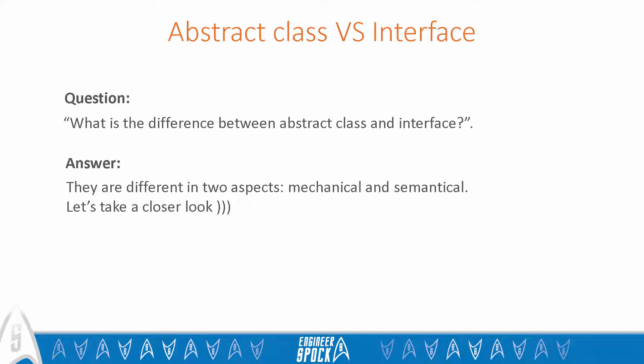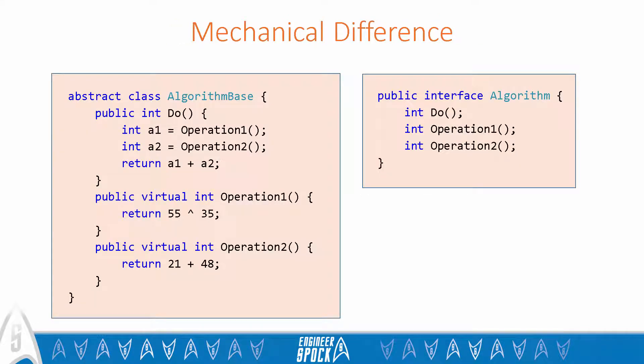The main mechanical difference is that an abstract class can have a default implementation, whereas an interface is just a bunch of member declarations — it defines their signatures. Here we can clearly see that the abstract class is capable of defining virtual members with implementations. The interface is not capable of doing such things.